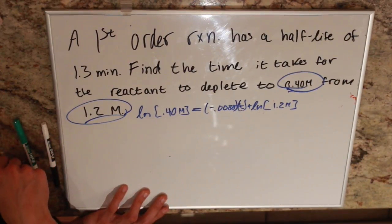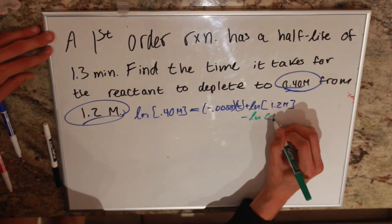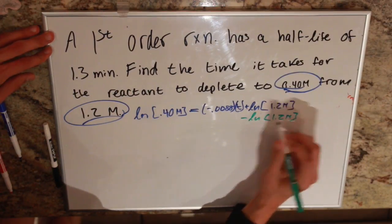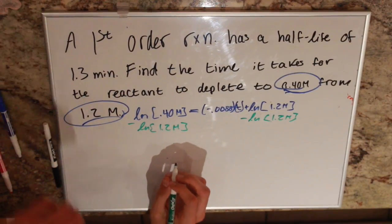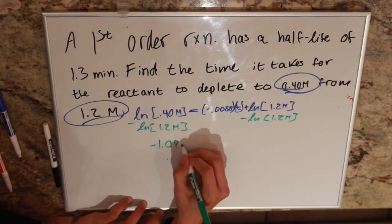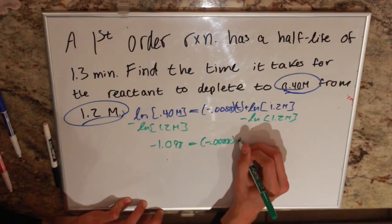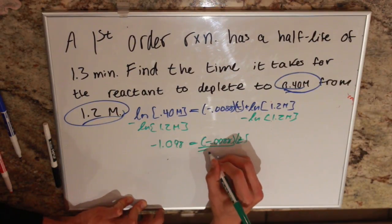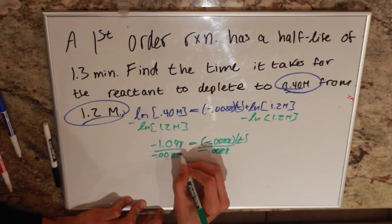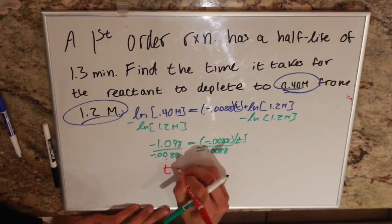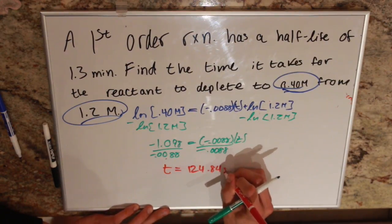Now we do some simple algebra. We subtract this natural log from this natural log. That gives us negative 1.098 equals rate times time. We divide by the rate, which gives us a time of 124.84 seconds.